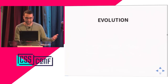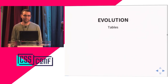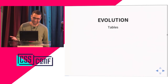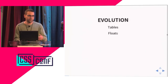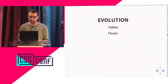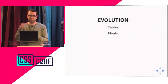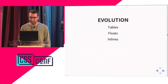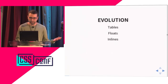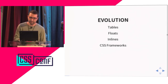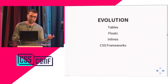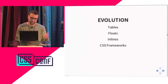You know better than me how this evolved — people started to use tables. You shouldn't be ashamed because I guess that's what all of us did. Then we had floats, which work nicely for floating an image on the left with text flowing on the right, but when you try to create complex layouts with columns and rows, things become more complex. The same happens with inline-blocks. Then CSS frameworks emerged, and they are pretty good, but there are so many it's hard to choose the right one, and you have to download extra CSS or JavaScript.